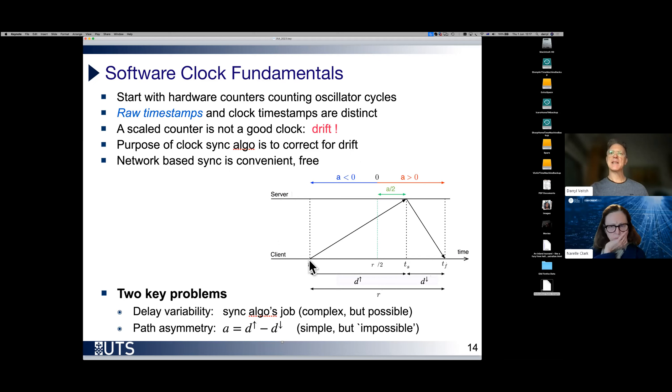Here is a picture of a network-based clock sync. Here we are at the client. We want to synchronize it to a server somewhere else. At a given time, we send a packet to the server. The server receives it at a later time and sends it back. So we have a forward and a return path. Forward delay here. Reverse delay here. Add them together, we get round trip time. Subtract them and we get asymmetry.